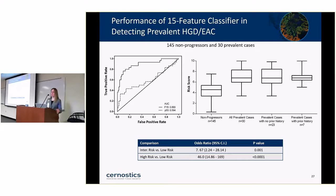We conducted a nested case-control study from four institutions. Cases were patients with prevalent high-grade dysplasia and cancer—a subsequent diagnosis within less than a year, most within three to six months. Controls showed no progression with median surveillance of 5.5 years. There were 30 prevalent cases and 145 non-progressors. The area under the ROC for the classifier was 0.89. Patients who scored high risk were 46 times more likely to be harboring high-grade dysplasia or cancer elsewhere in their esophagus compared to low-risk patients. The prevalent cases included patients with no prior history of high-grade dysplasia or cancer, and those with recurrence after prior endoscopic treatment.